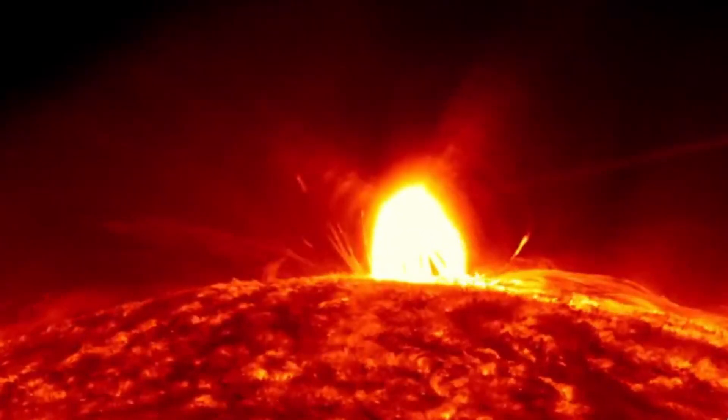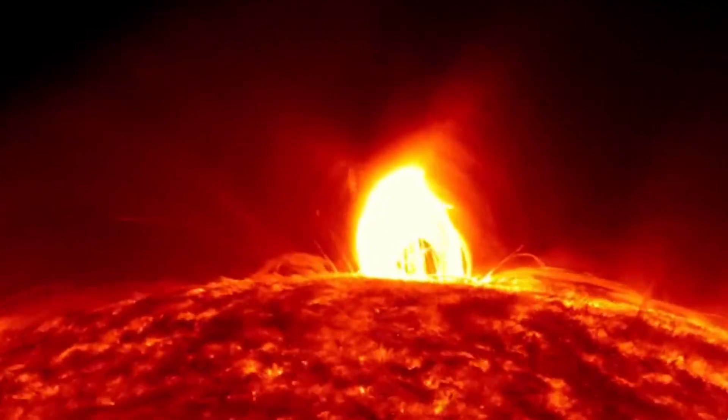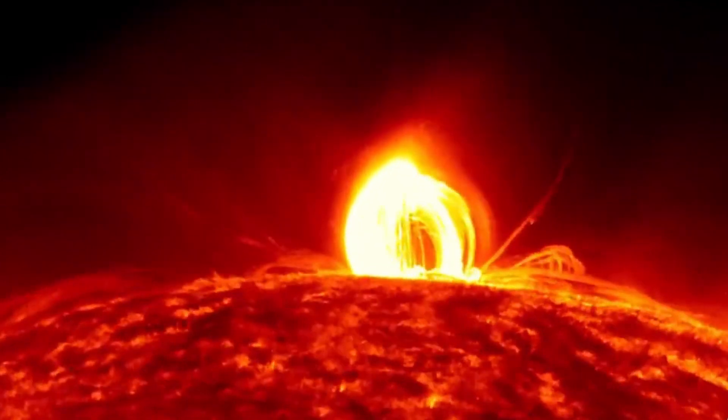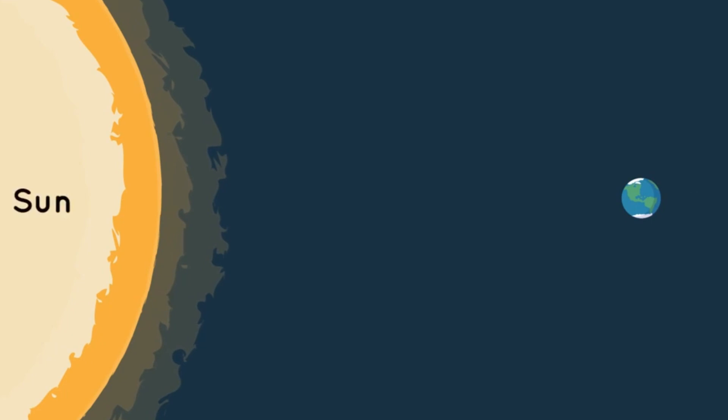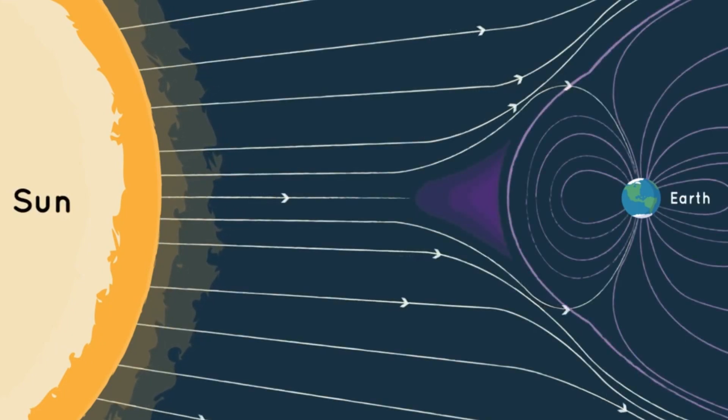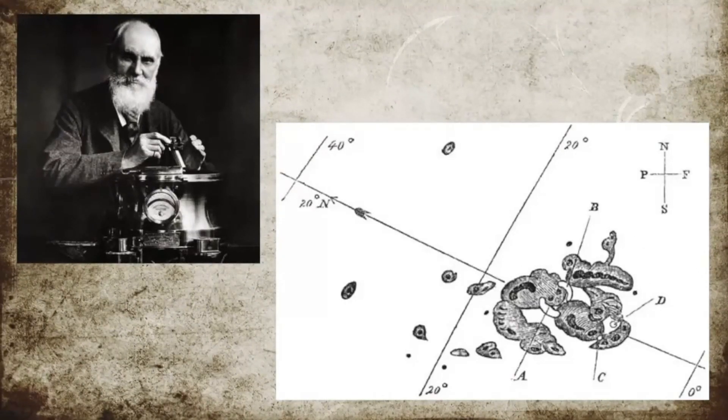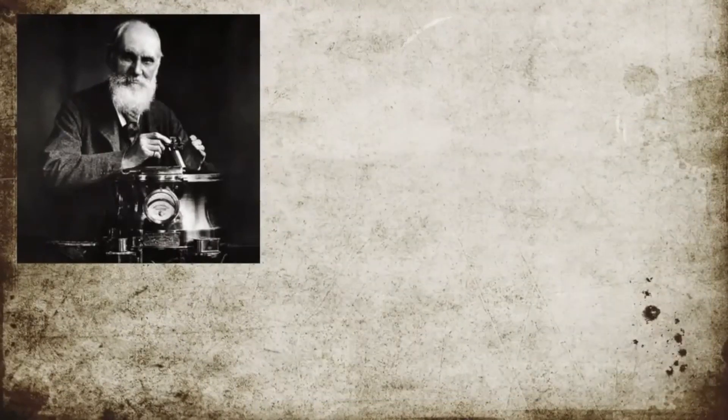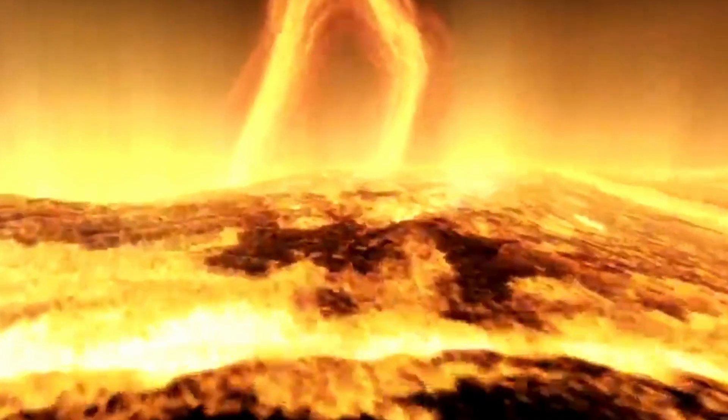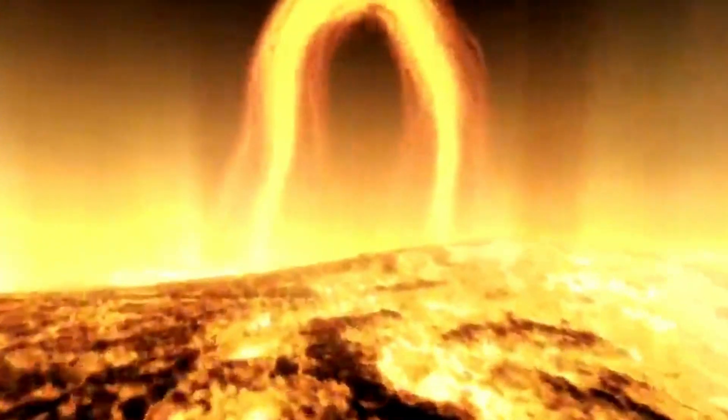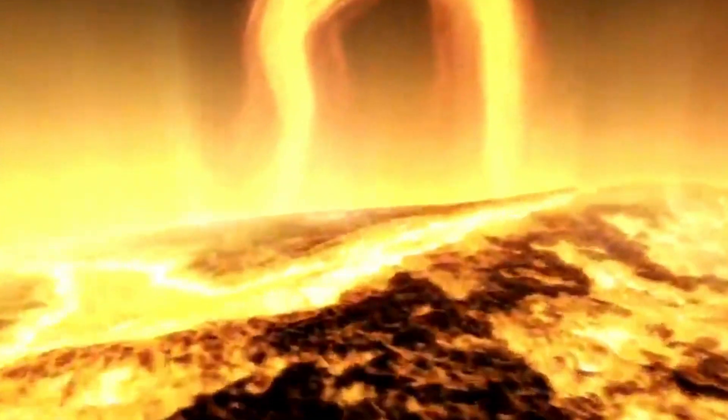Humanity had just witnessed the most intense geomagnetic storm in recorded history. Today we explore what such solar phenomena mean for us in the present day and how they could shape our future. Let's uncover the entire story. So what do you think the two English astronomers first recorded before midnight of the 1st of September, 1859? Solar flares. Those were the first solar flares to have ever been recorded.